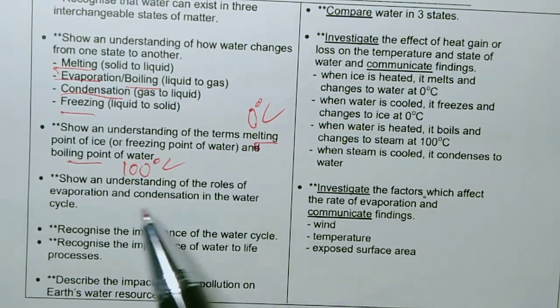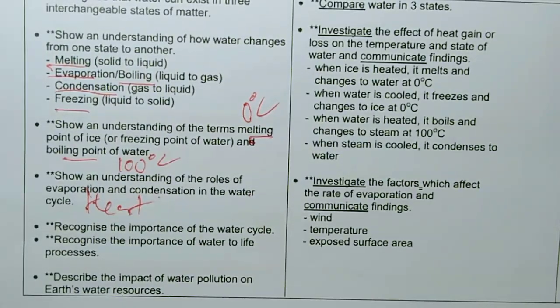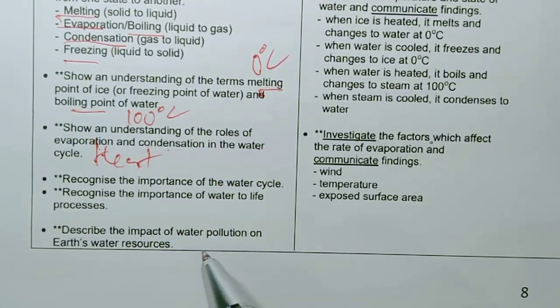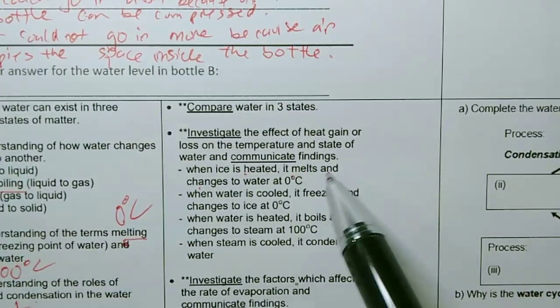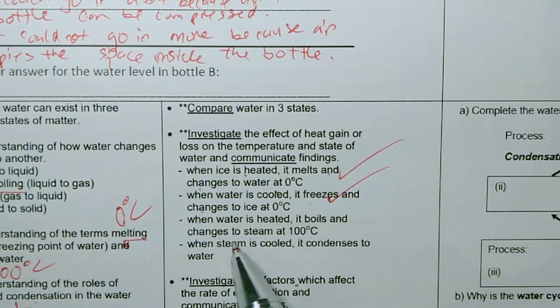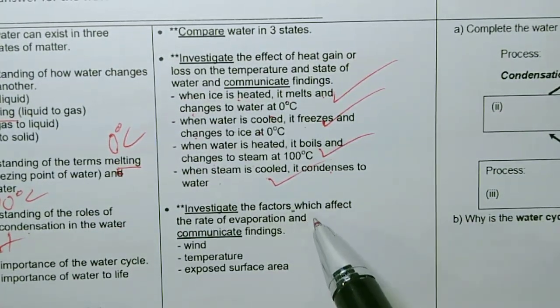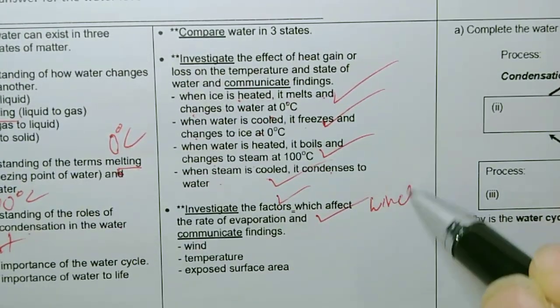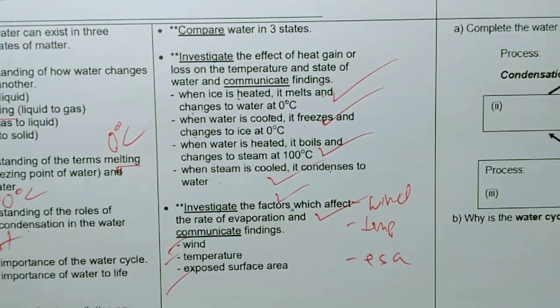Understanding the role of evaporation and condensation in the water cycle, and therefore the role of heat. Without heat, which comes from the sun, primarily comes from the sun, there is no evaporation. Therefore there will be no water cycle. That's why sun is so important. And water pollution is very important because that's usually caused by men, how that affects the amount of drinkable water that we have. When ice is melted, it melts and changes to water at 0 degrees Celsius. When water is cooled, it freezes and changes to ice at 0 degrees Celsius. When water is heated, it boils and changes to steam at 100 degrees Celsius. When steam is cooled, it condenses to become water. We can also test you on rate of evaporation and the factors that affect it. There are three factors: the amount of wind, the temperature of the place, and the exposed surface area.